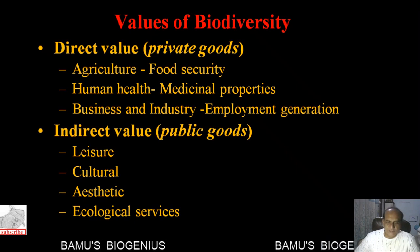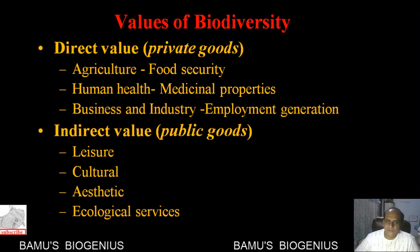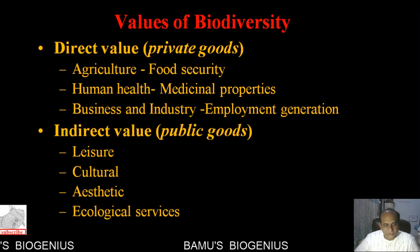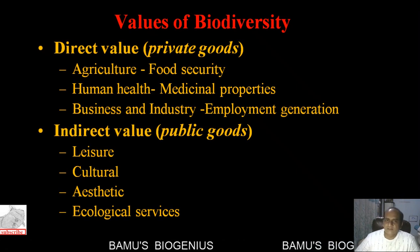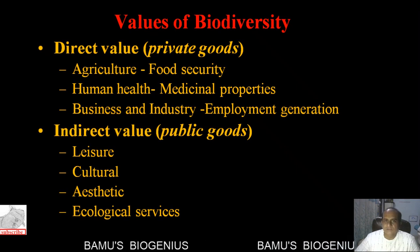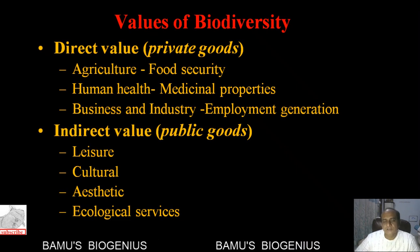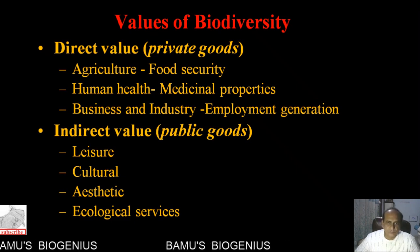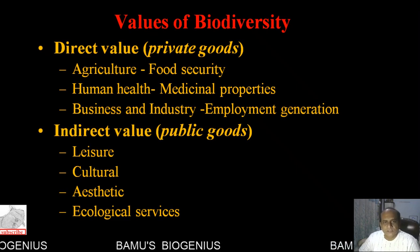We all know what biodiversity is - it is the number of different kinds of animals and plants that are present in the ecosystem. This biodiversity is very important for the survival of each and every species, and for all living organisms on the Earth, because there is a kind of interdependency between all living things.